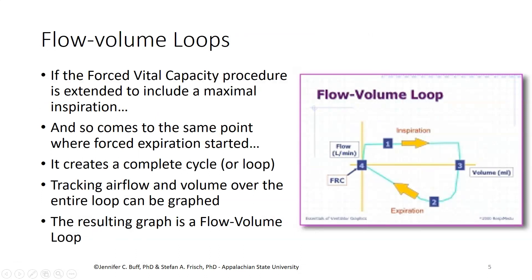When we do the forced vital capacity procedure and include a maximum inspiration after that expiration, so that we end up, respiratorily speaking, at the same point where the forced expiration started, we have a complete breath cycle or a loop. If we use a device to track the airflow and the volume moved over that entire time, we get something called a flow-volume loop, like in this image on the right, though it is upside down from the ones that we usually look at.